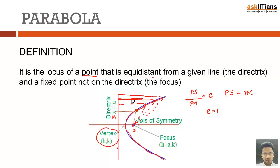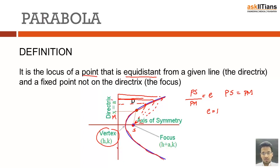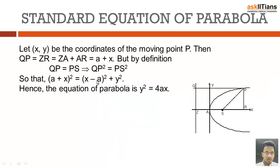The axis of symmetry — you can clearly see that along this line the parabola is symmetric, meaning if you cut it in half and overlap it, it will be equal. Let's see the equation of parabola.